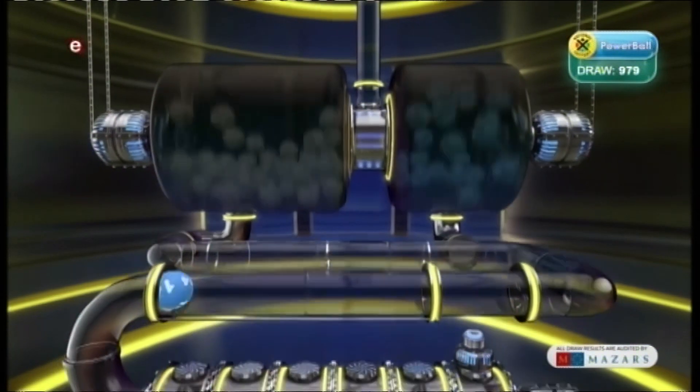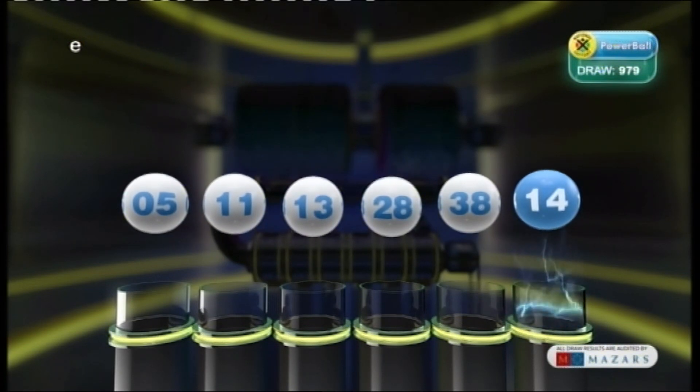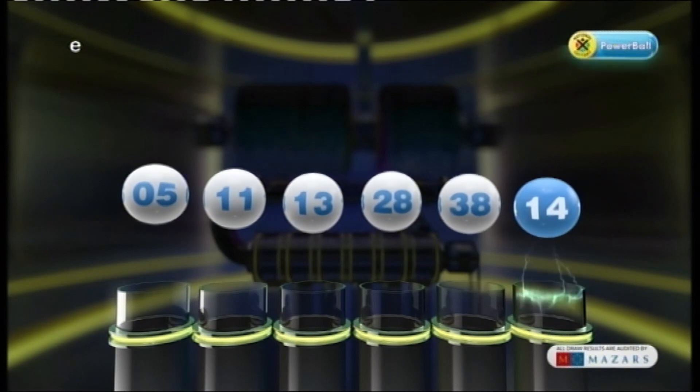Let's recap these numbers in numerical order. Five. Eleven. Thirteen. Twenty-eight. Thirty-eight. And the PowerBall is fourteen.